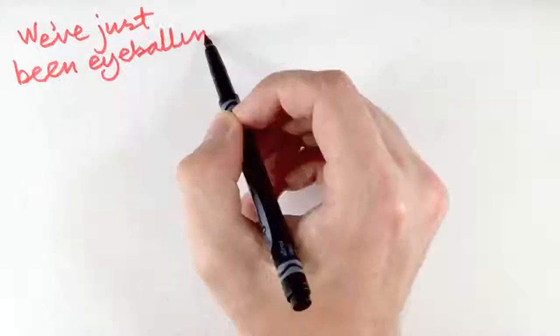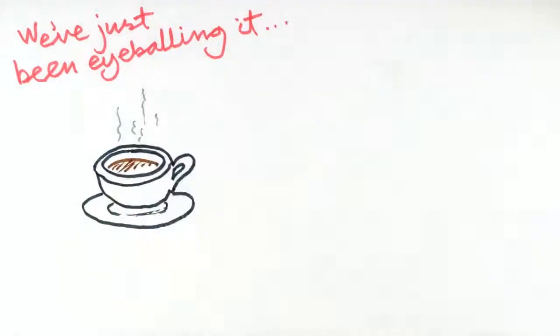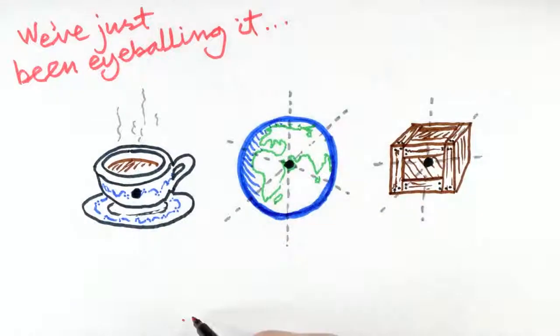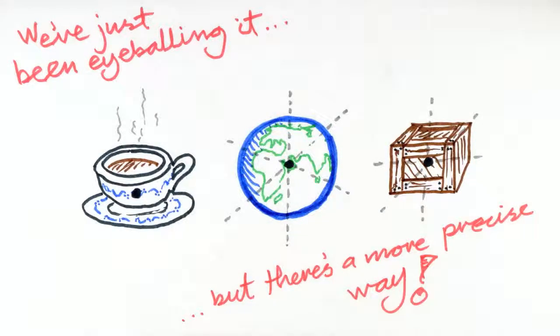Up until now, we have identified the center of mass by eye, often by using symmetry. We'll still do that, however, we'll now discuss a more precise way to find the center of mass of a system.